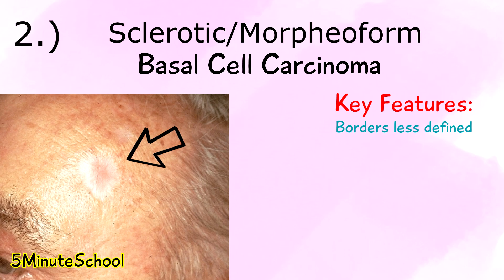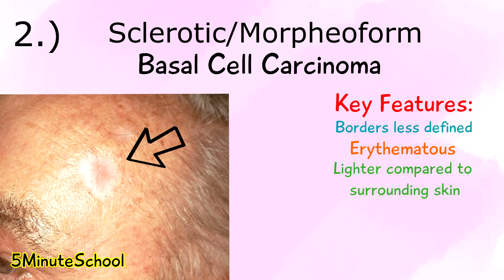Sclerotic basal cell carcinoma is often erythematous but can also be a bit lighter compared to the surrounding skin. This type can occur anywhere on the body, but the head and neck are the more common locations. It has also been known that some other types of basal cell carcinomas may eventually, over time, differentiate and transition into the sclerotic or morpheaform basal cell carcinoma.